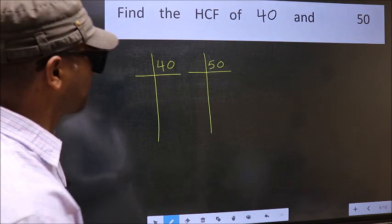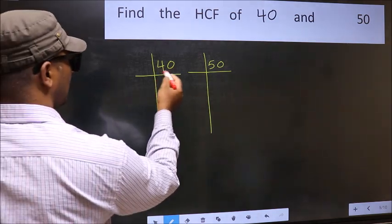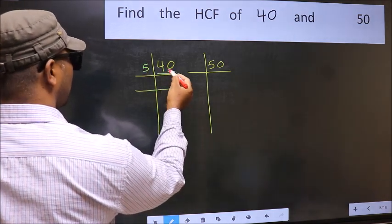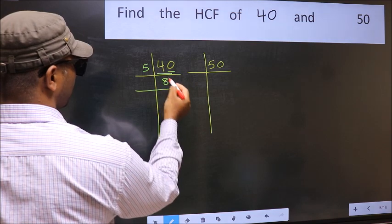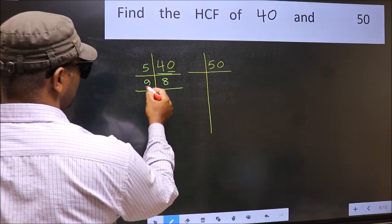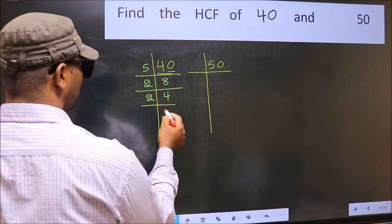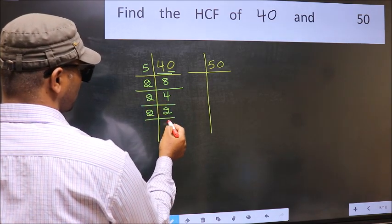Next, in this number, the last digit is 0 so take 5. When do we get 40 in the 5 table? 5 times 8 is 40. Now 8 is 2 times 4 is 8. 4 is 2 times 2 is 4. 2 is a prime number, so 2 times 1 is 2.